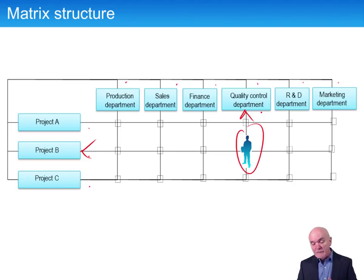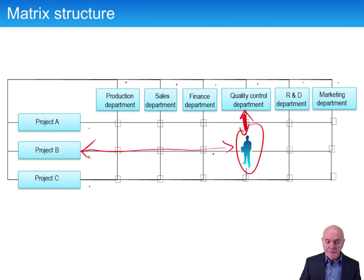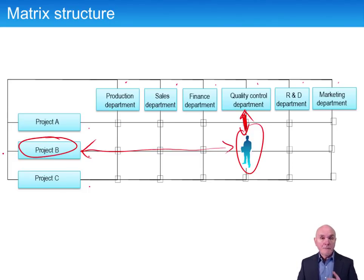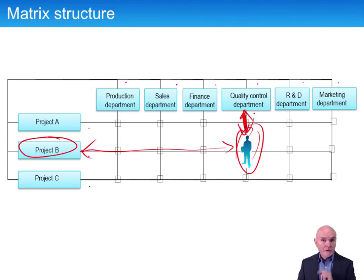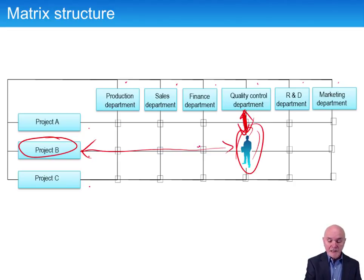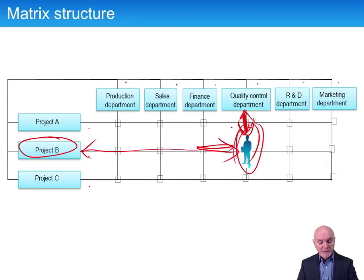The claimed disadvantage of the matrix structure is that it puts this person under competing pressure. If project B is running behind time, the project manager might say to drop some quality control tests to speed up. But the quality control manager says no — the project must be completed safely and to specification. So here we have two managers putting competing pressure on this person. Some management theory says it's wrong to have two bosses shouting at you.